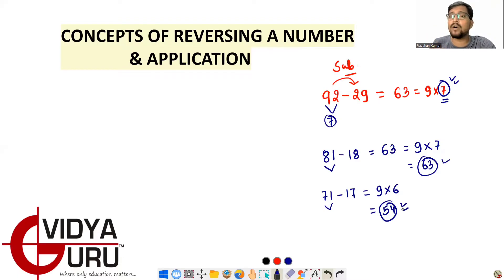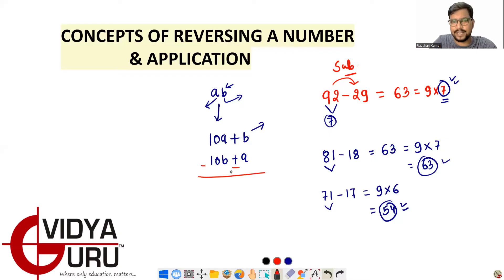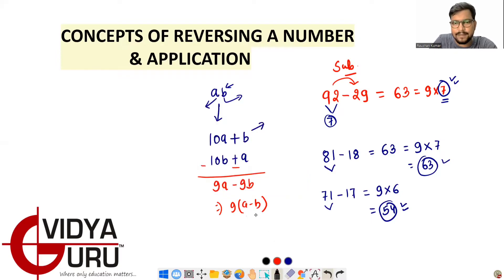Now let's see the algebraic origin of the subtraction concept. Take digits 'a' (tens) and 'b' (units). The original number is 10a + b; the reversed number is 10b + a. Subtracting: (10a + b) − (10b + a) = 10a + b − 10b − a = 9a − 9b = 9(a − b).